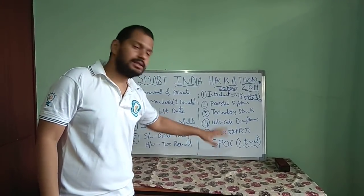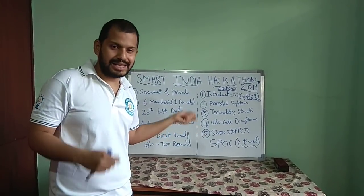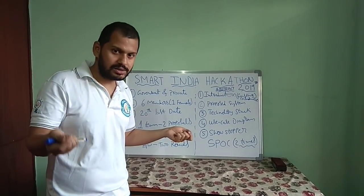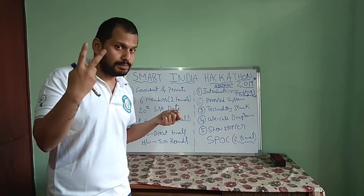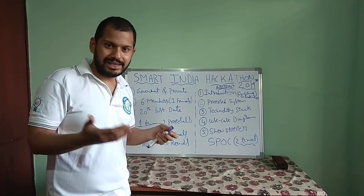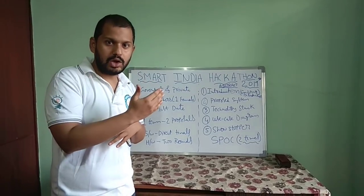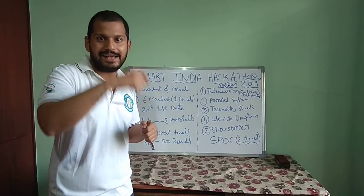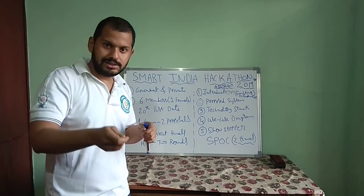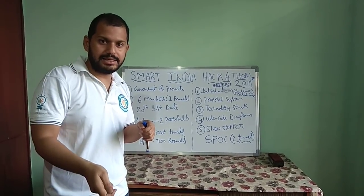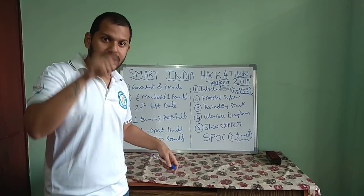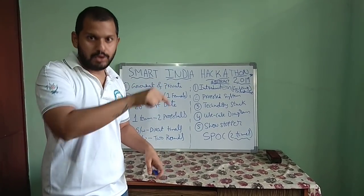The last important point is SPOC — Single Point of Contact. Every college will have one or two SPOCs. You need to meet your SPOC two times. First, you need to get a consent letter from the college, then the team leader has to register on the Smart India Hackathon portal and enter the teammate names. After that, the team leader goes to the SPOC so the SPOC can activate the account, confirming these are students of the college.